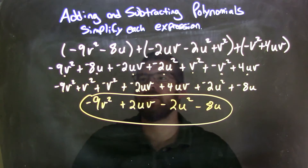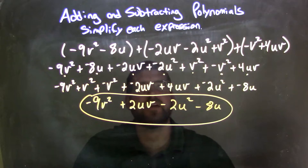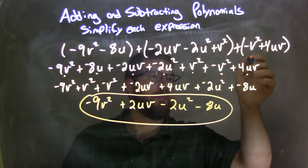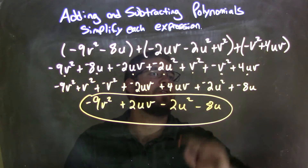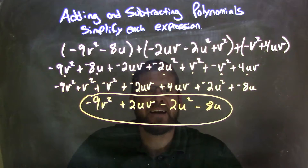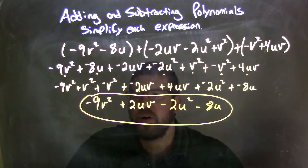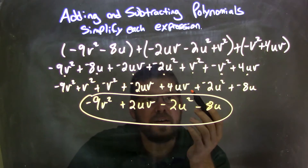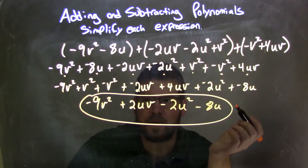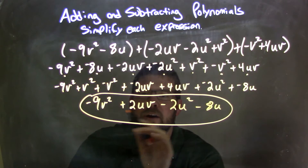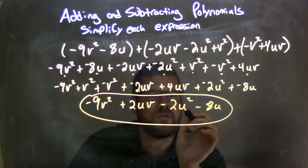Let's recap. We were given negative 9v squared minus 8u in one parenthesis, plus negative 2uv minus 2u squared plus v squared in another parenthesis, plus negative v squared plus 4uv in another parenthesis. I rewrote all of this as adding a negative, then combined my like terms — usually highest degree first. Since I had a mix of v's, u's, and uv's, I grouped v squareds first, then uv's together, then u squareds, then u's. Simplifying gave me the final answer: negative 9v squared plus 2uv minus 2u squared minus 8u.